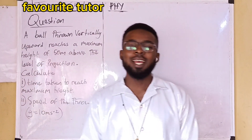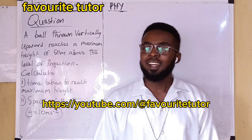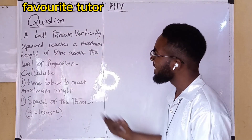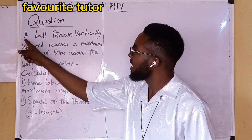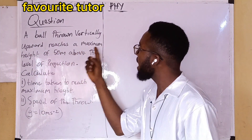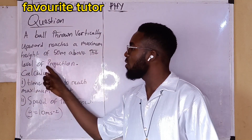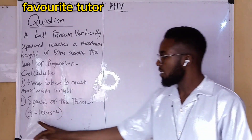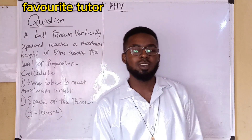Good day, welcome back to another episode of your favorite tutorial. Today we're doing physics. I've been taking questions and this question was thrown to me — it's a past question. It says: a ball thrown vertically upward reaches a maximum height of 50 meters above the level of projection. Calculate the time taken to reach maximum height, the speed of the throw, and acceleration due to gravity is 10 meters per second squared.